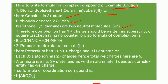Therefore, the complex ion has 1 positive charge. The 2 negative charges satisfied by chloride ions should be written as a superscript of the square bracket with no counter ion. So the formula of the complex ion is [CoCl₂(en)₂]⁺.